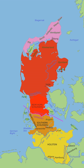Danish: Den Kimbriske Halvo or Den Euske Halvo. German: Kimbrisch Halbinsel. It is a peninsula of northern Europe that forms the continental portion of Denmark and part of northern Germany. The names are derived from the Jutes and the Cymbri, respectively.